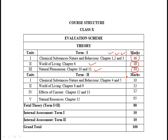For term second, unit one covers chapters 5 and 4, total marks 10. Unit two covers chapters 8 and 9, total weight 13. Unit four — effect of current — includes chapters 12 and 13, total weight 12. Unit five — natural resources — covers chapter 15, total weight 5. The total theory marks is 80, with internal assessment of 10 marks each for term first and term second, making a total of 100 marks.